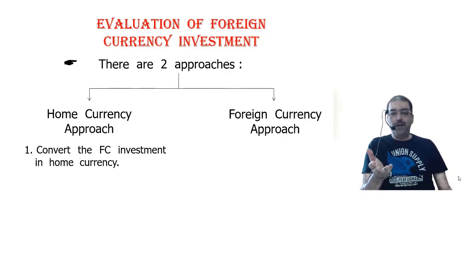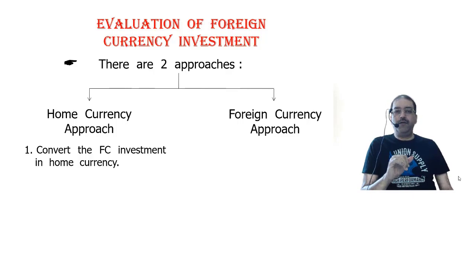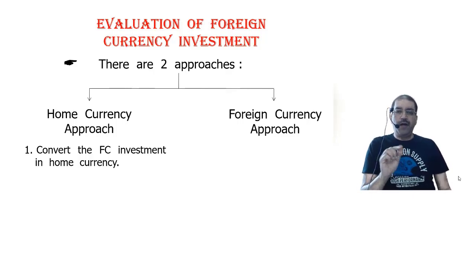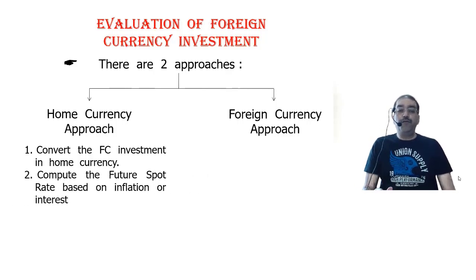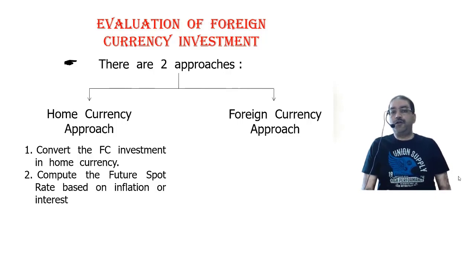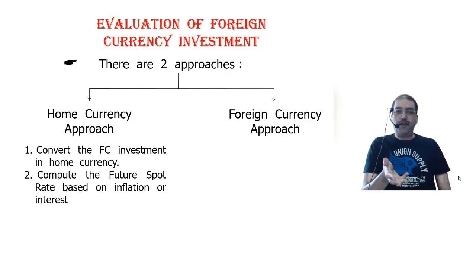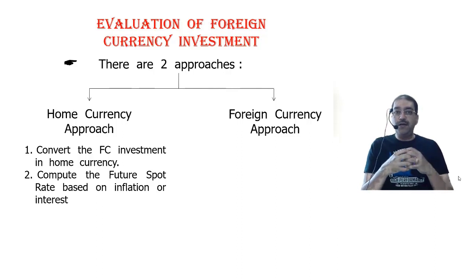Whatever investment is given — for example, so many dollars to invest in the US — immediately convert that into home currency at the spot rate. The second step is to compute the future spot rate, or forward rate, based on inflation, interest rates, or swap points — making use of the combination of capital budgeting and forex.